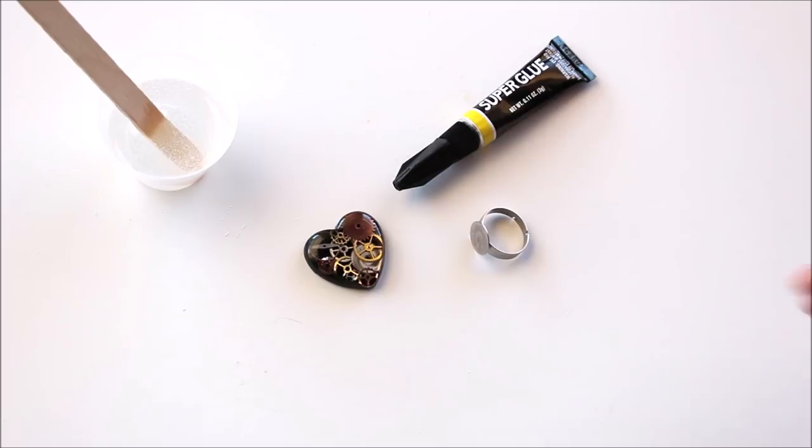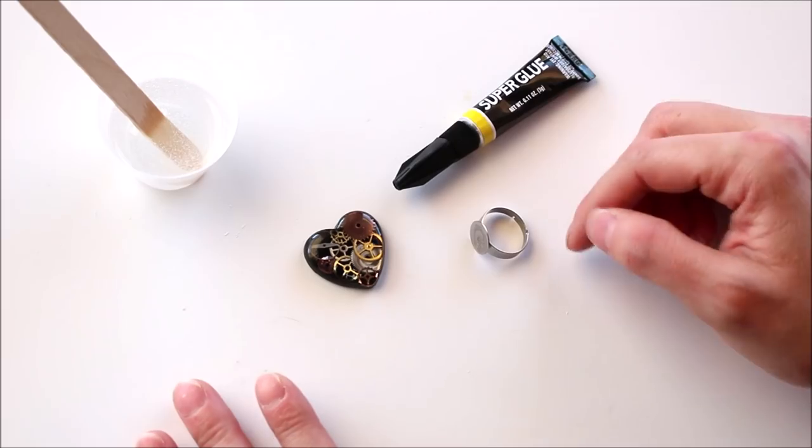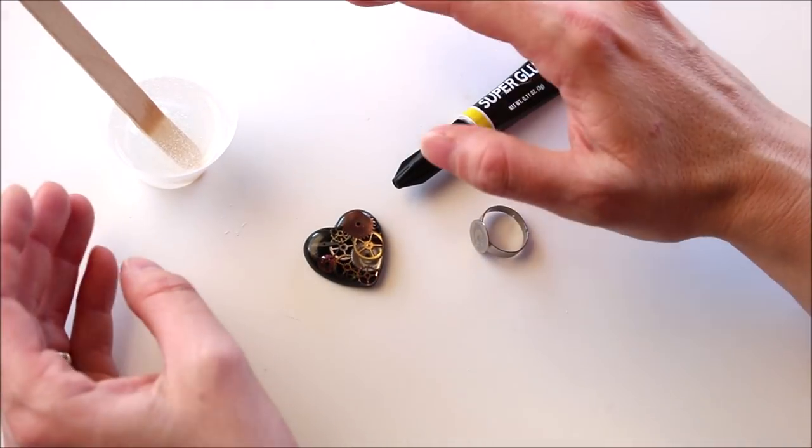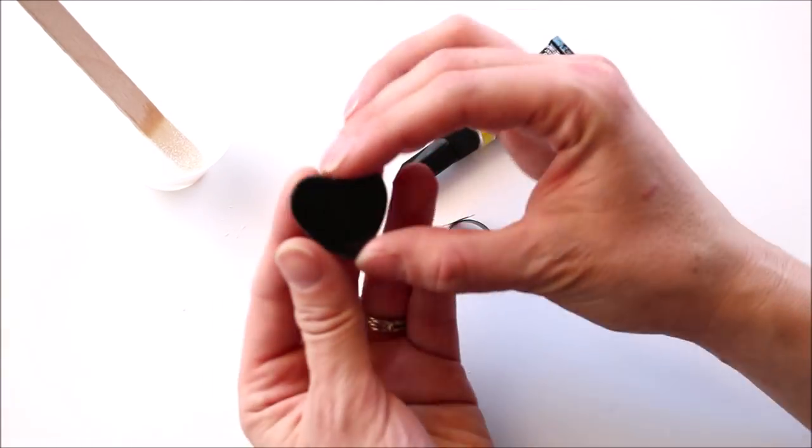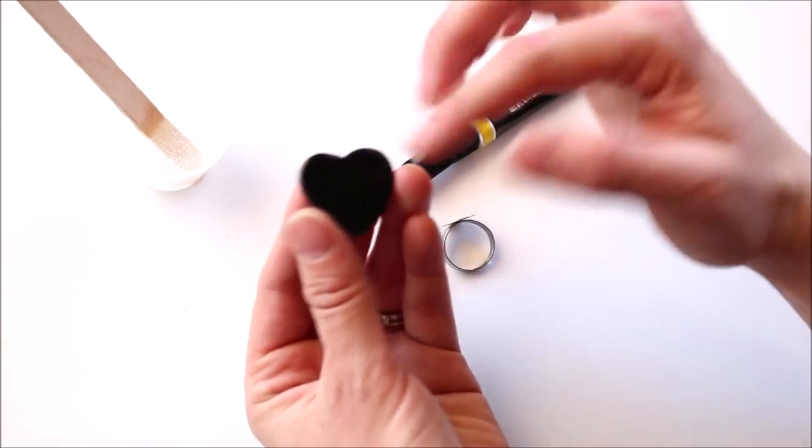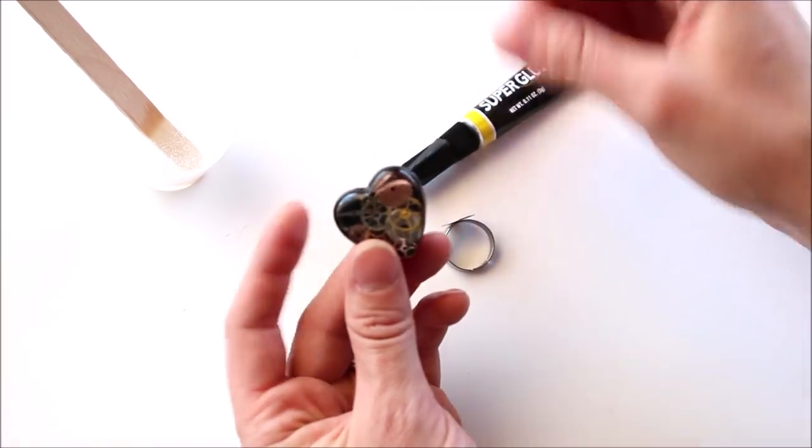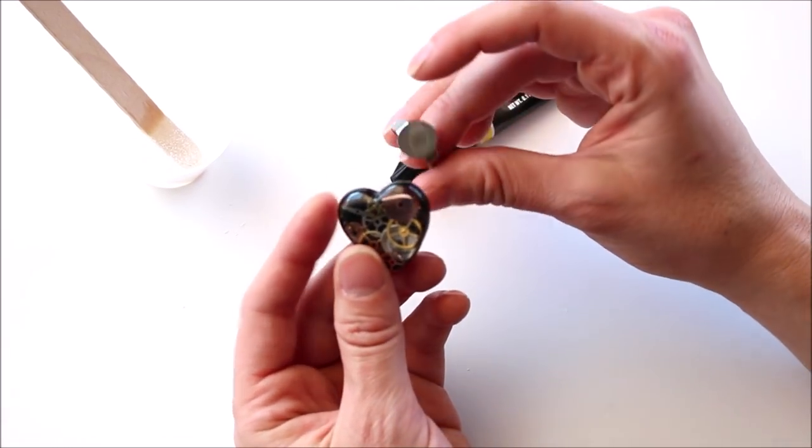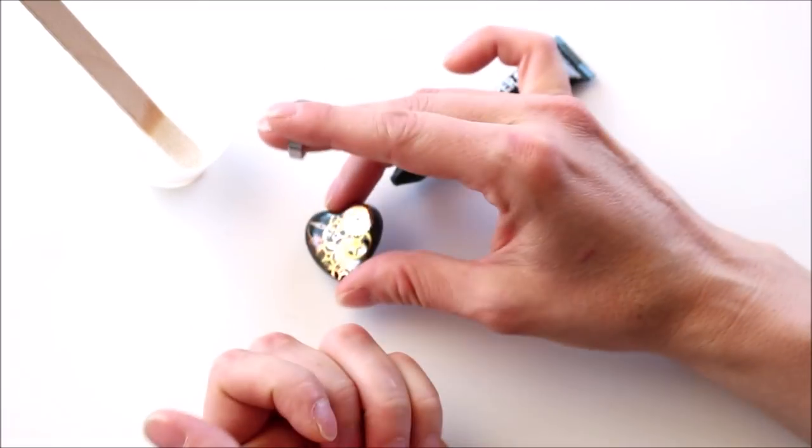So moving on, we're going to go ahead and attach our pieces. I have some super glue. I have my ring base. And I also have some more resin. And the reason I have more resin is because after we glue this part to this part, I'm going to take resin and I'm going to secure this on better because the life of a ring is pretty hard. If you just glued this, it would stay on for a little bit, but it would pop off eventually. So you need that reinforcement part.